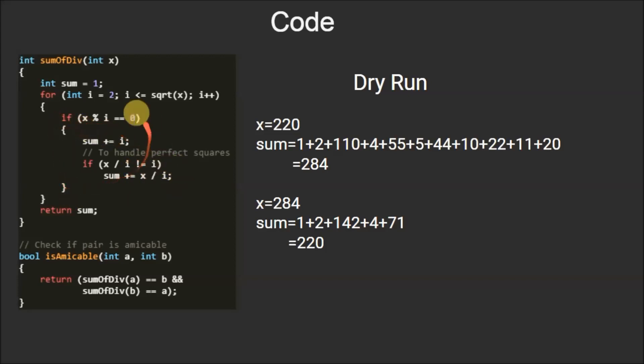Then after this for loop we are returning the value of sum. So this is the dry run of the code. If the value of x is 220, then this sum will be 1 plus 2 plus 110 plus 4 plus 55 plus 5 plus 44 plus 10 plus 22 plus 11 plus 20. This will come out to be 284.